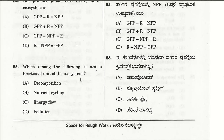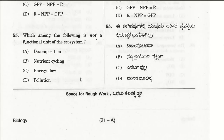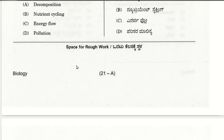The fifty-fifth question: which of the following is not a functional unit of the ecosystem? Pollution is not a functional unit of the ecosystem, whereas decomposition, nutrient cycling, and energy flow are functional units of the ecosystem.